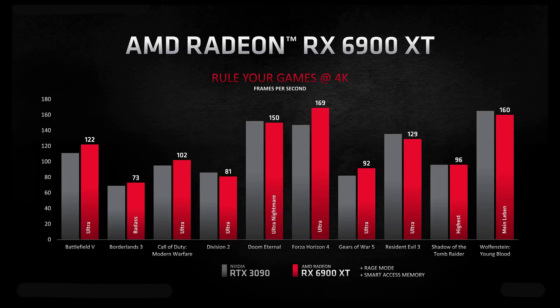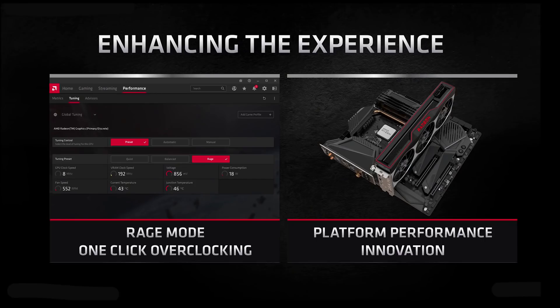Let's take a look at the performance chart for the RX 6900 XT. As you can see, AMD has decided to enable Rage Mode and Smart Access Memory for these performance numbers — extra performance modes they didn't actually use for the RX 6800 XT chart. Rage Mode is basically overclocking, boosting the power limits of the card, and AMD said you get maybe 1 or 2% performance difference on the titles listed.